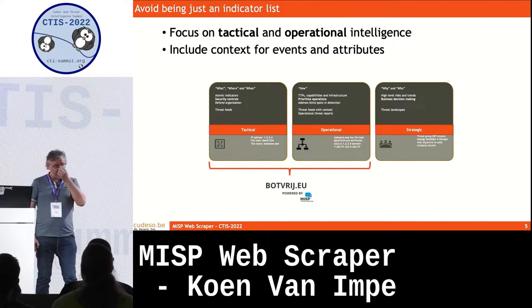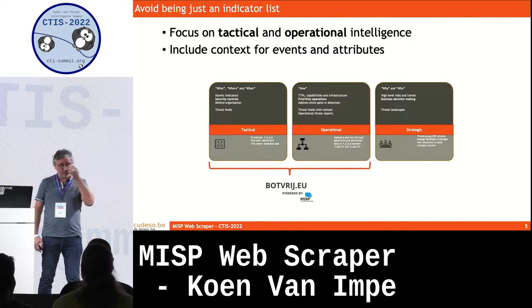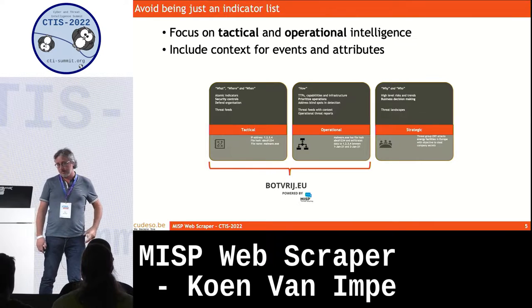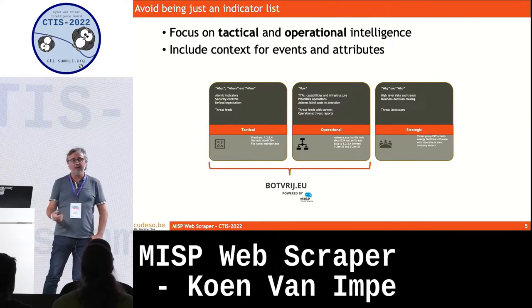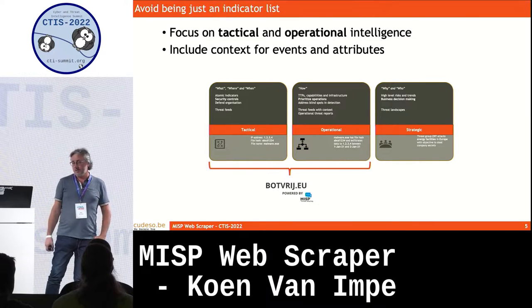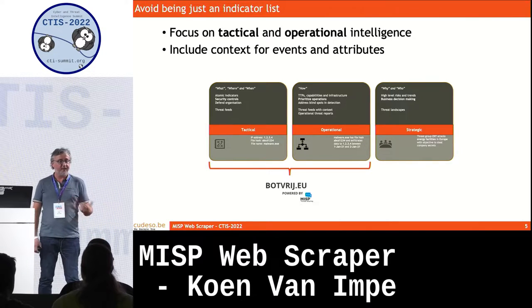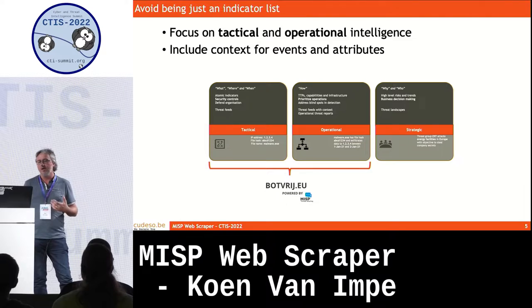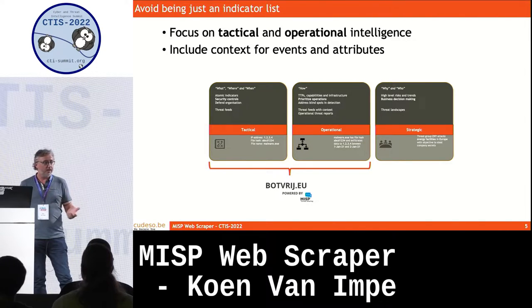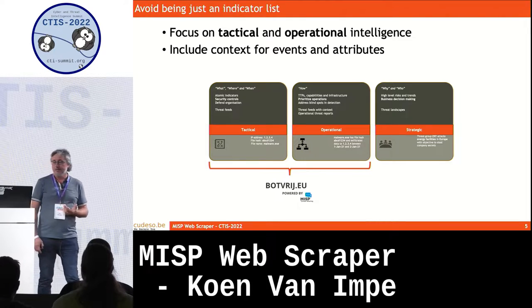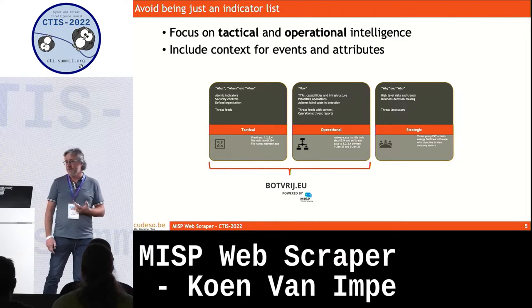When I started with botvrij.eu, one of the ideas was not to include only an indicator list — all of these lists are already available — but also to include some contextual information. For example, if you add an IP address to the list, also describing what that IP address does and how it relates to other objects included in MISP threat events.